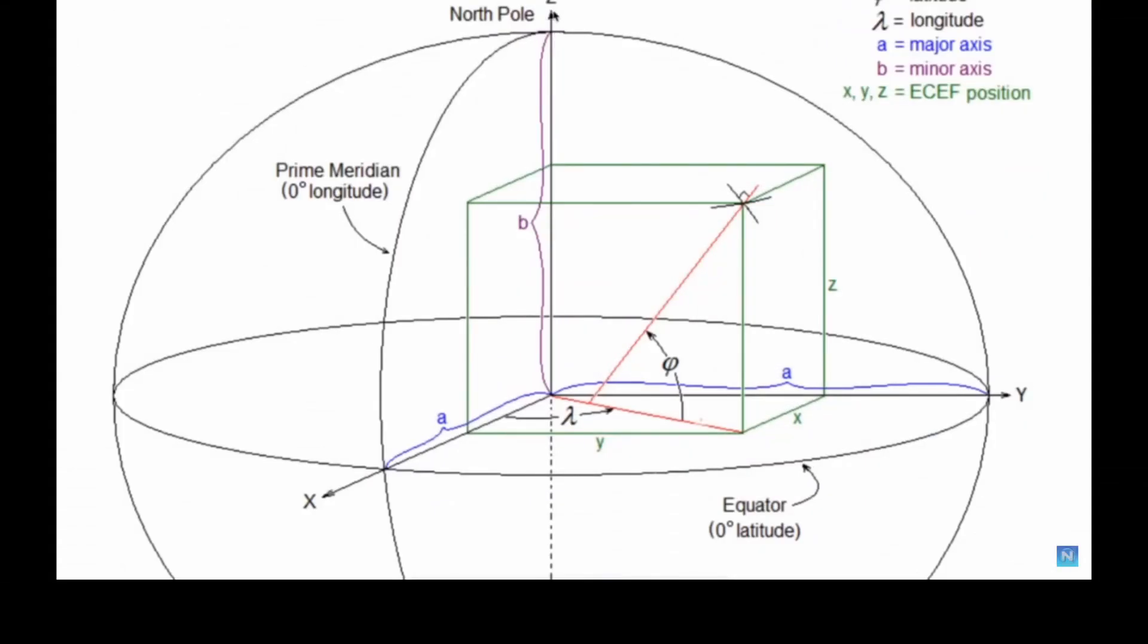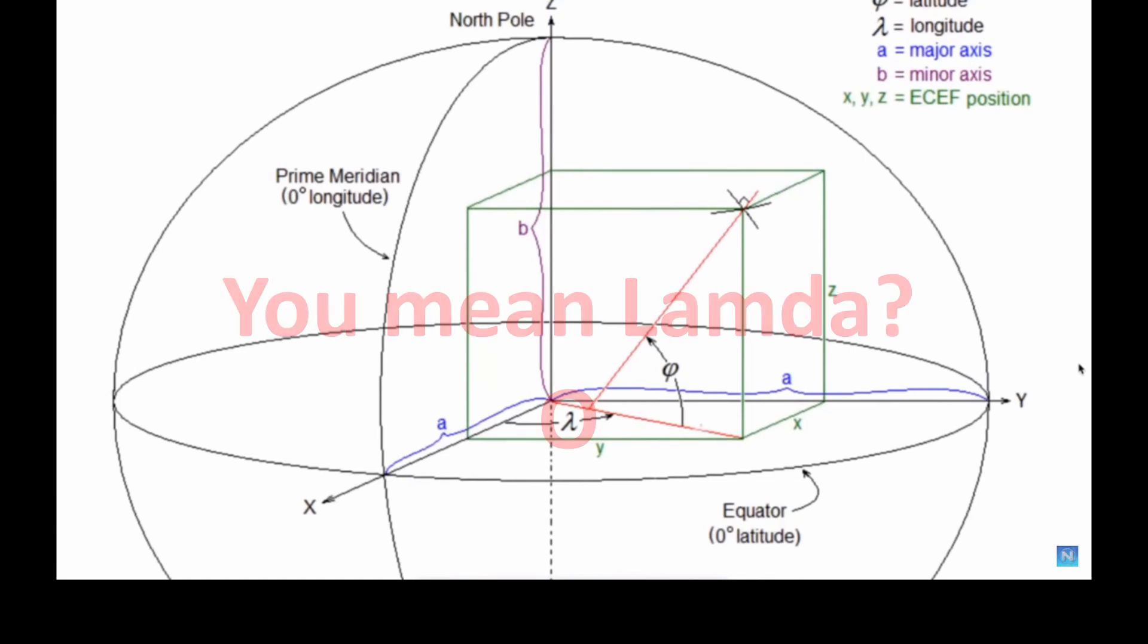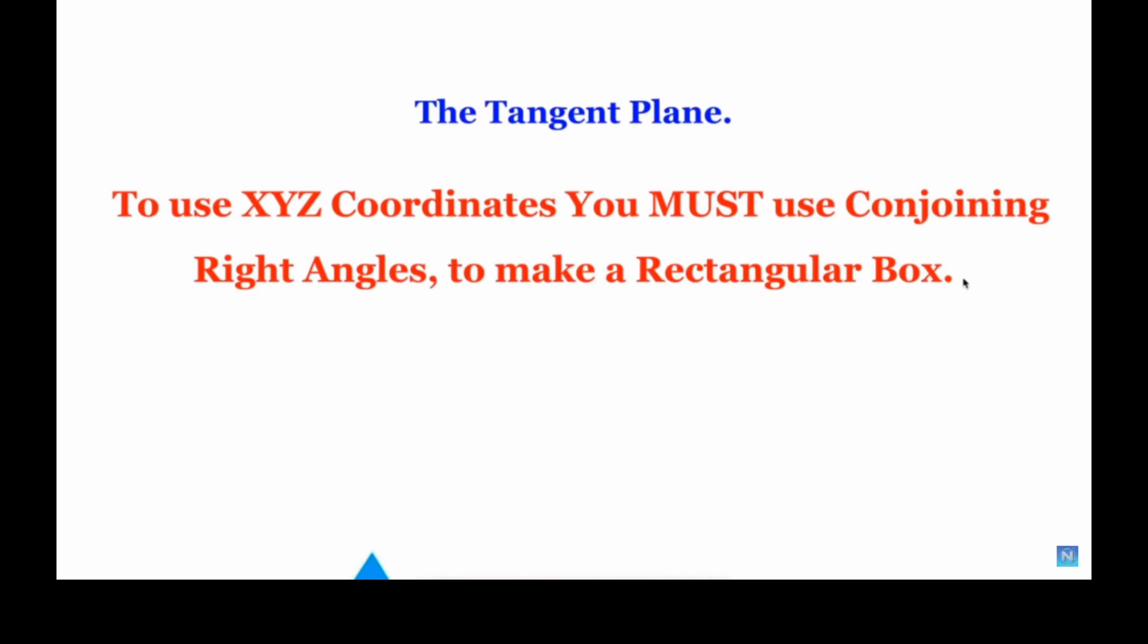The Z here, the Z axis, the zenith, is always through the north pole. The X is out at the prime meridian, and the Y is out the opposite way, out at the equator. It's what they call a right-handed system. What's that symbol that looks like a right angle between X and Y? Can you see that little symbol? So all XYZ coordinates make a rectangular box, okay? And that means you have to use conjoining right angles.